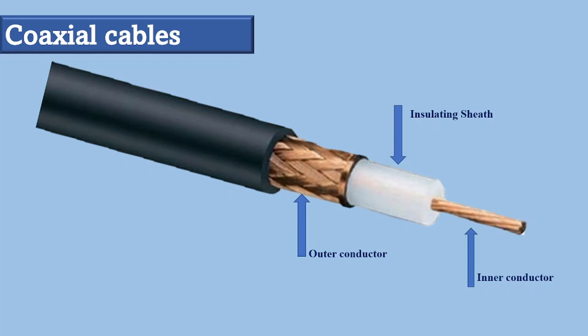The first purpose is that it's used as a shield against noise, and the second is that it's used as a second conductor which completes the circuit. This outer conductor is also enclosed in an insulating sheath, and the whole cable is protected by a plastic cover.